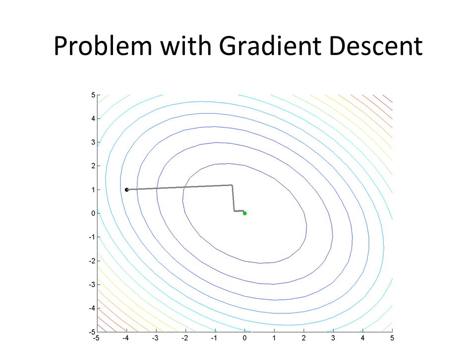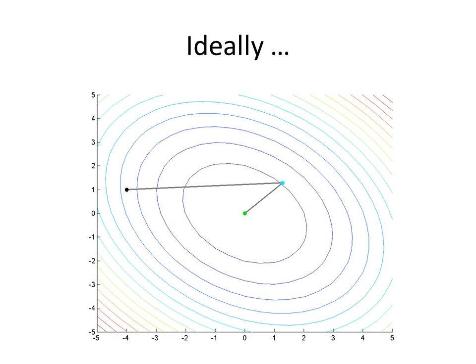One problem with gradient descent is that this path will form a zigzag. Ideally, we would have liked to take a slightly larger step than we did and reach a point for which the next step led directly to the goal. Even better would be to take a step along the gradient such that the gradient at the next point would still be orthogonal and would reach us to the goal.